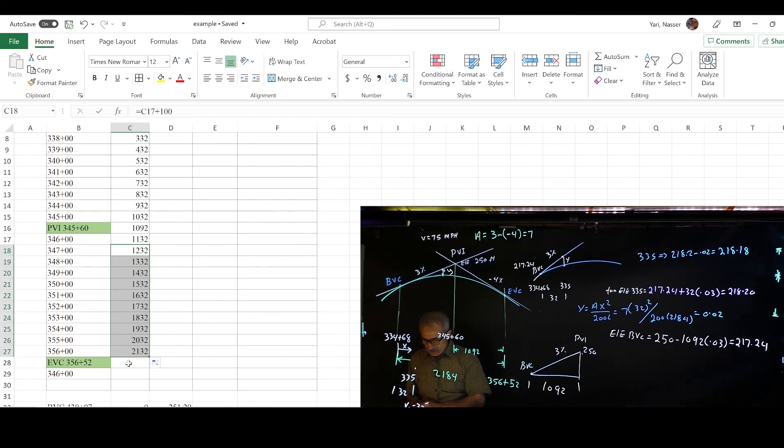Then I'm going to go to the next final, I'm going to type in equal, above cell plus, because you're going to only 52, and hit enter. And there it is, 2184, which is length of our curve. And if you go to PVI, you see 1092, which is halfway. That's correct.